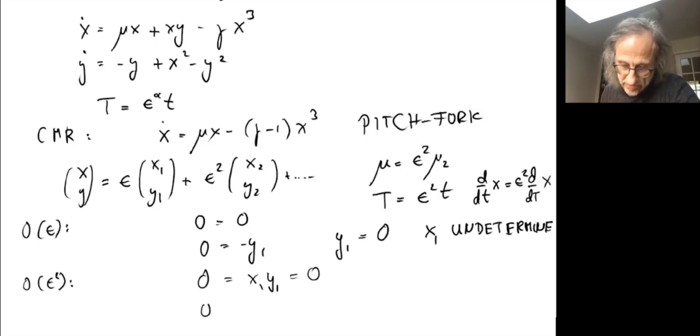The y equation is zero equals -y₂ plus, and now we have an x² which amounts to x₁² with order ε². So we get that term plus x₁², the y² term is zero because y₁ is zero. Therefore, we conclude y₂ = x₁², whereas x₂ is undetermined.